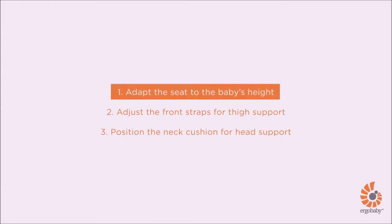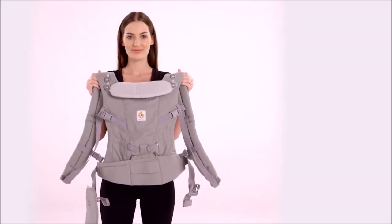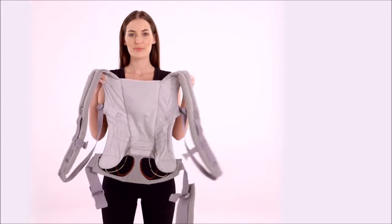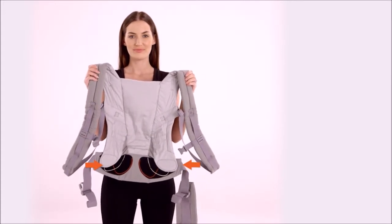First, adapt the seat to your baby's height. The carrier's bucket seat gradually adjusts to the size of your baby. Just follow the color-coded lines on the waist belt velcro.